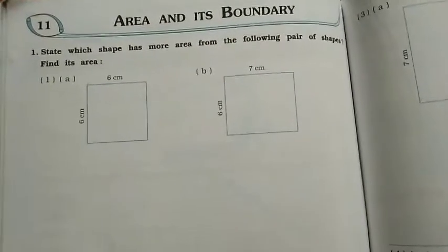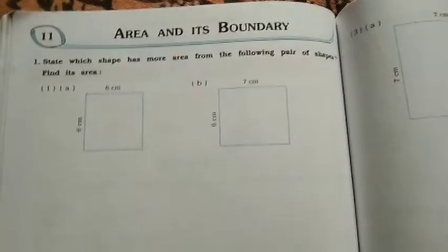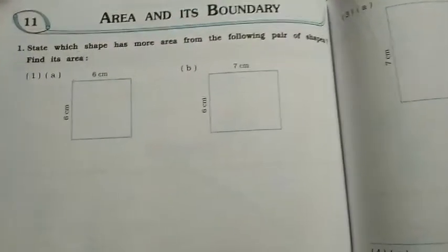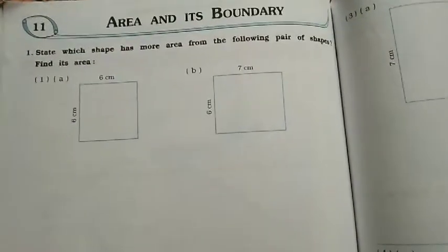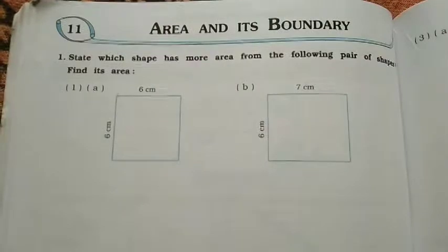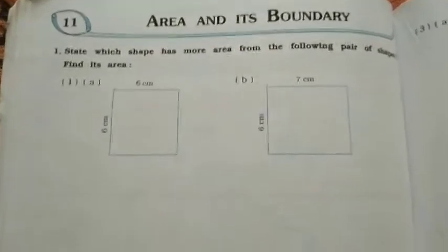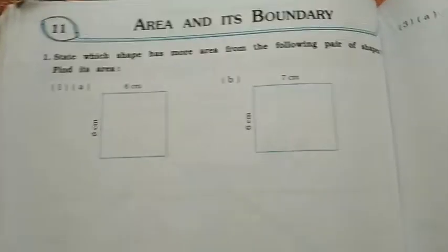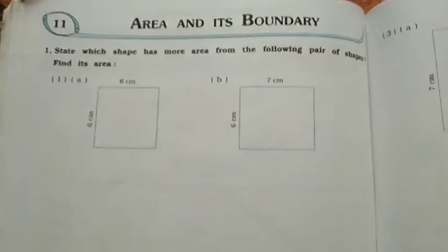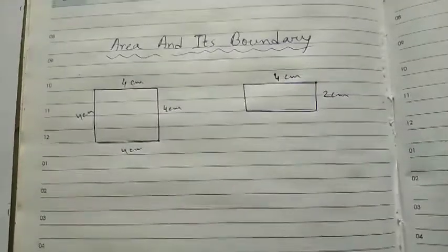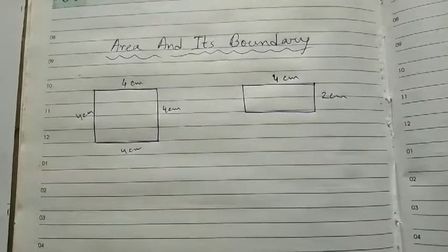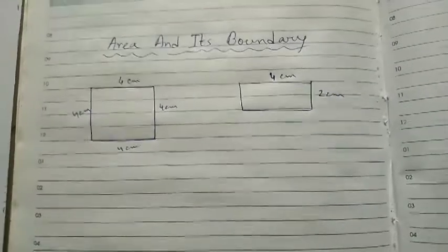In the previous class you know that area - what is area, what is boundary. And you also know how to find out the area for any shape. Actually boundary means it is the perimeter of the shape.